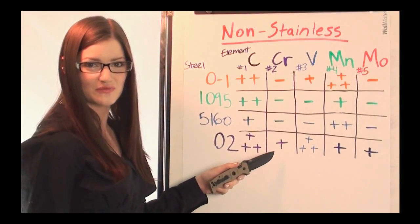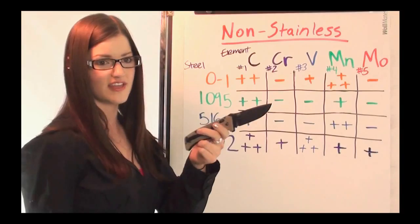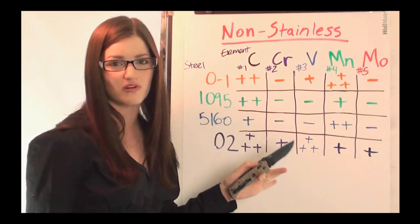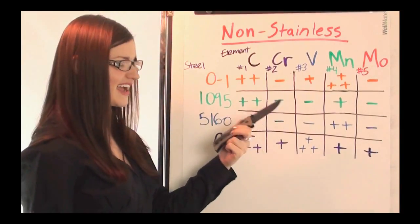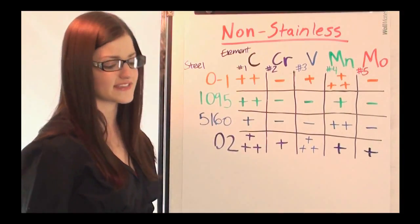The weird one in this situation would be the D2, which is what this Benchmade Adamas is made of, and its chromium is just on that border of what's considered stainless. So it's going to have great corrosion resistance in comparison to any of these more carbon blades.